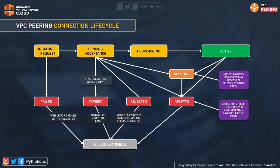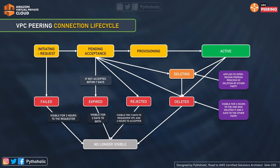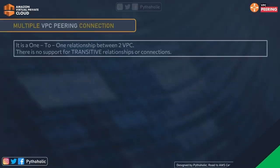When in the pending state, the request can go toward expiry if not accepted, or it can be rejected or deleted. When you initiate the request, you can also backtrack by cancelling it, and it goes to the failed state where it will be visible for two hours to the requester. The key states are: initiating request, pending acceptance, provisioning, active, deleting, deleted, rejected, expired, and failed. Importantly, connections are no longer visible after a certain point of time.